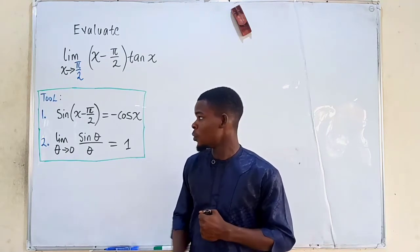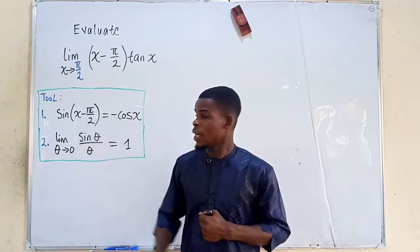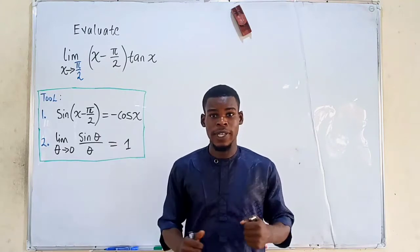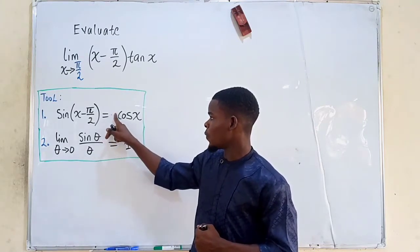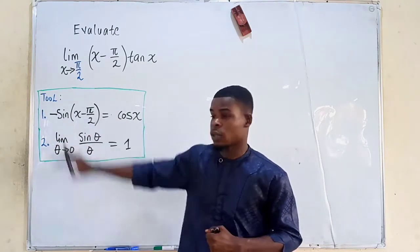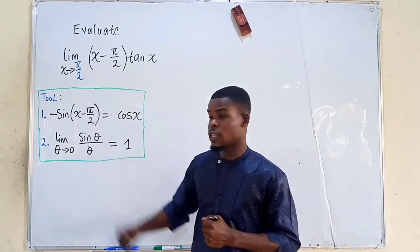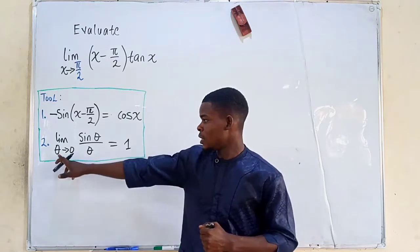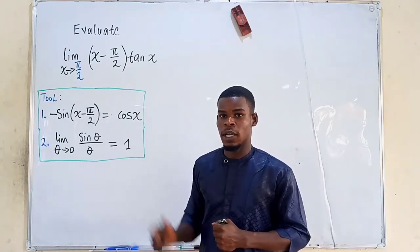We'll be evaluating this limit using two tools. The first is a trigonometric identity: sin(x - π/2) equals negative cosine of x, or equivalently cosine of x equals negative sin(x - π/2). The second tool is the standard limit: sin(θ)/θ as θ tends to 0 equals 1.